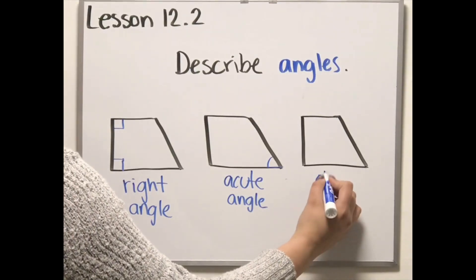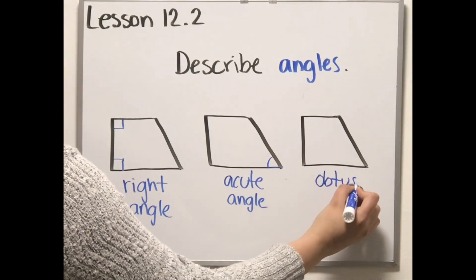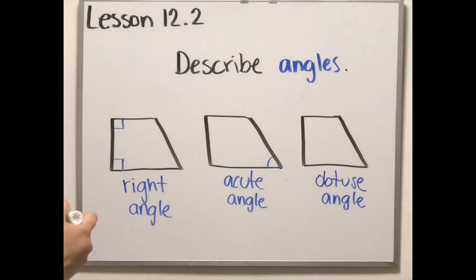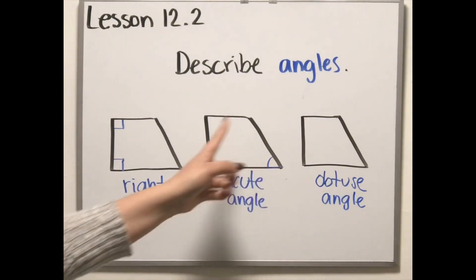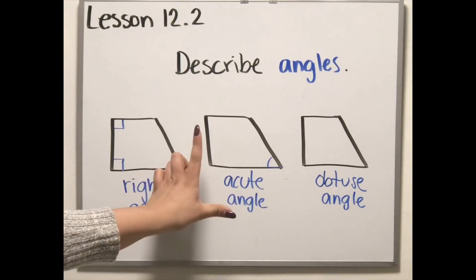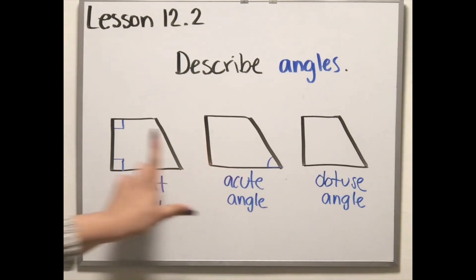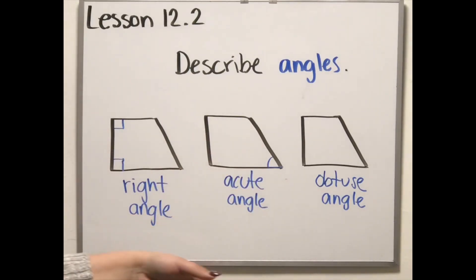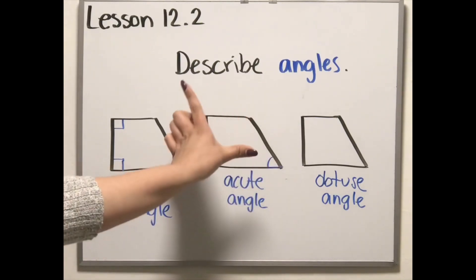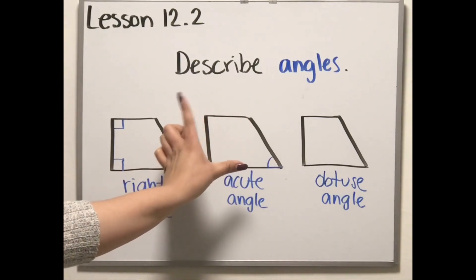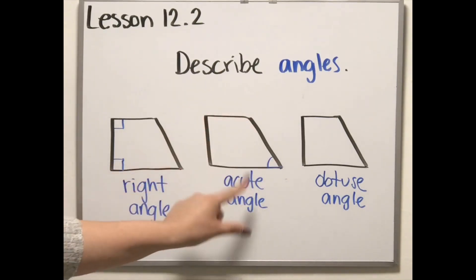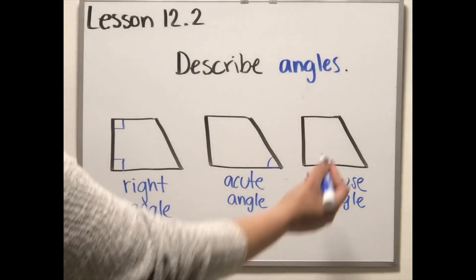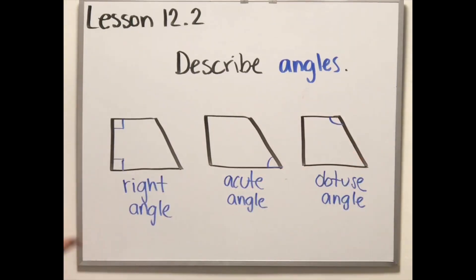Now the last one is called the obtuse angle. The obtuse angle is the opposite of the acute. Remember, the acute is smaller than the right angle. The obtuse is going to be bigger than the acute — the acute is the smallest one and the obtuse is the biggest one. This one right here is representing the obtuse angle.